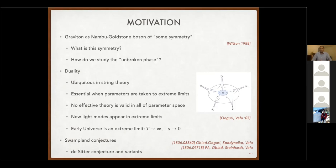Finally, there's some more recent work on trying to understand de Sitter space as it arises in string compactification. There's a whole slew of de Sitter conjectures and their variants — which I think are fair to say are speculative — that argue that the de Sitter phase or some phase close to it such as inflation is hard to realize in string theory. If taken seriously, you would wonder how we actually understand the fate of the universe and all the big bang cosmology puzzles. But I would say these conjectures are somewhat speculative, perhaps interesting to explore.